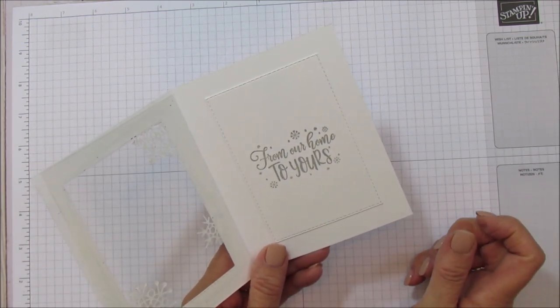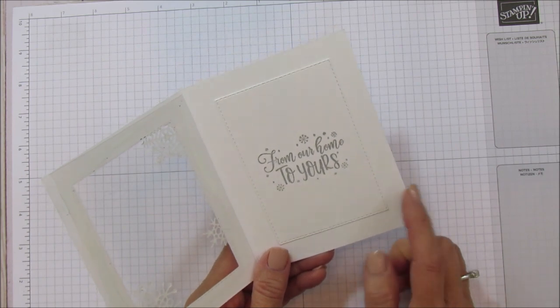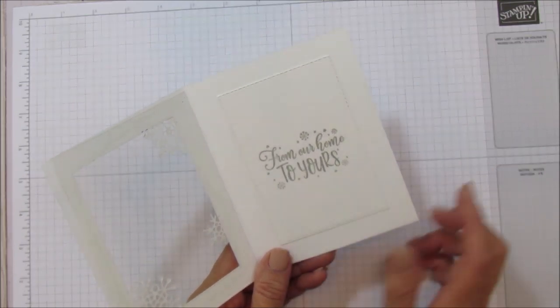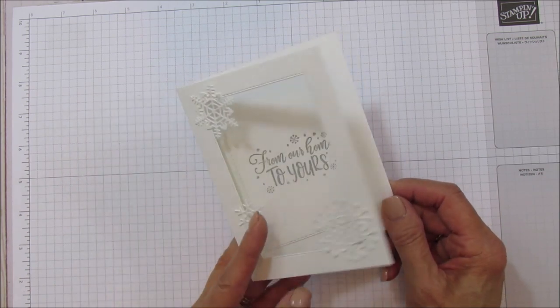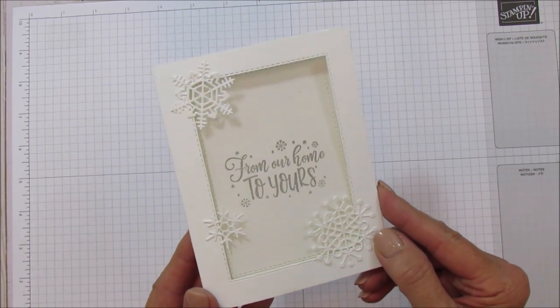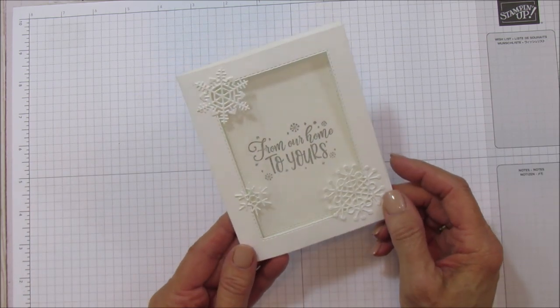It just says from our home to yours and then you can sign it on the bottom. I'm using the stitched rectangles for this which makes this card so easy to do.